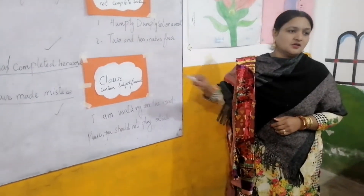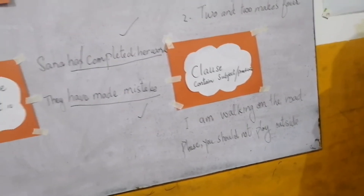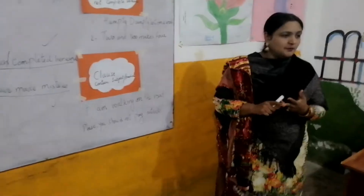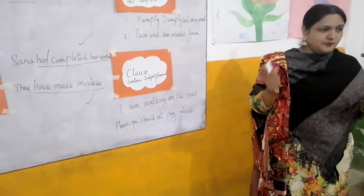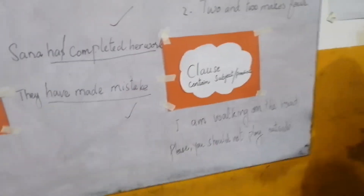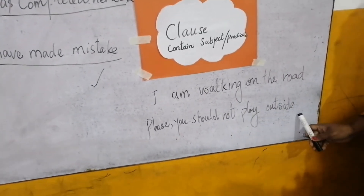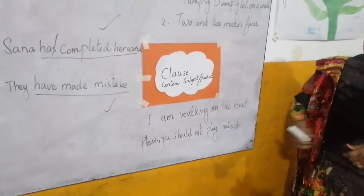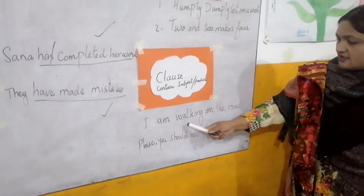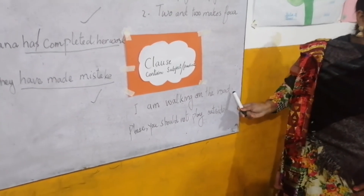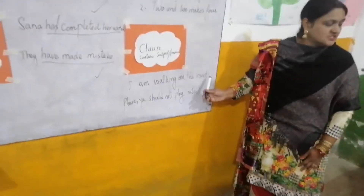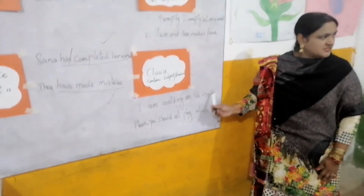Now we are talking about the clause. A clause is a group of words that contains a subject, it also contains a predicate, and a verb is also there. So that is a complete sentence and it also gives the complete sense. For example, 'I am walking on the road' and 'Please, you should not play outside' — in these examples you can see the subject is there, the verb is there, and the predicate is there. It gives the complete sense of the sentence and all grammar components are included.